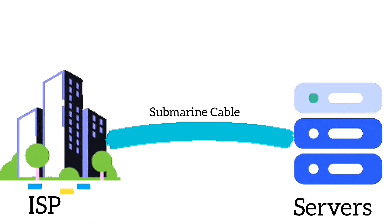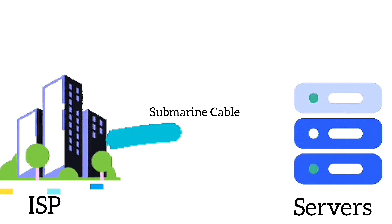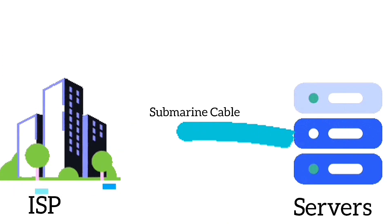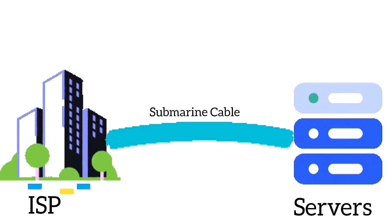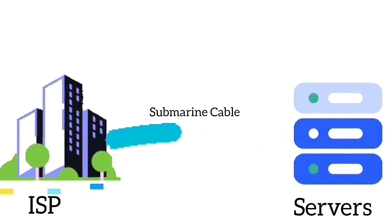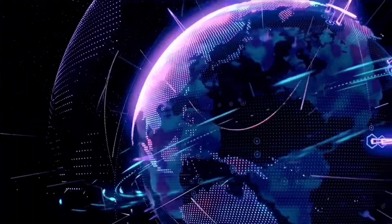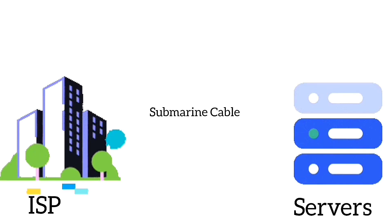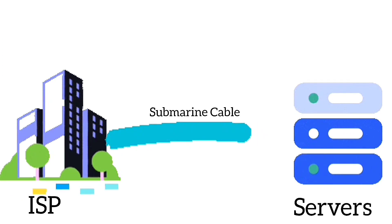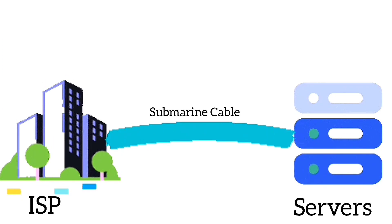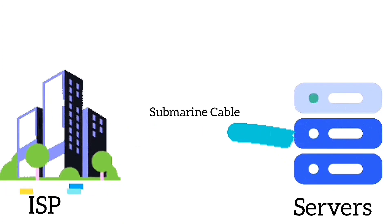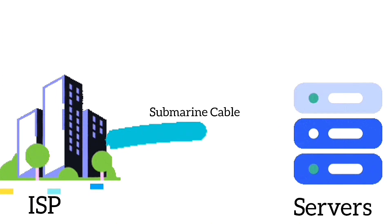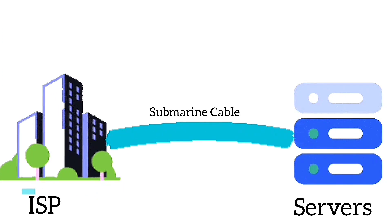ISPs and servers are both connected for data exchange, and they work together to provide internet access. Submarine cables connect servers with ISPs across the globe. Submarine cables are long cables that run under the ocean and connect different countries, carrying internet data around the world. They play an important role in connecting ISPs and servers across different regions of the world.